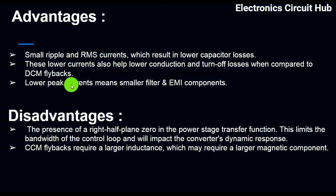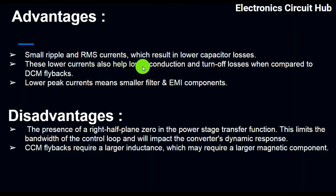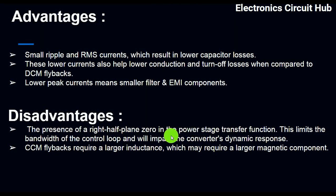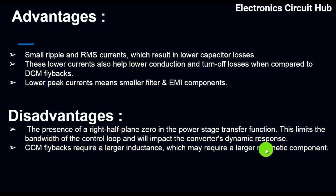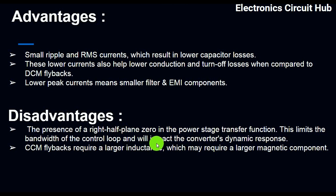Let us now understand the advantages and disadvantages of flyback CCM. Continuous conduction mode provides small ripple and RMS current, which leads to lower capacitor losses. These lower currents also help achieve lower conduction and turn-off losses compared to DCM flyback. Lower peak current means smaller filter and EMI components. However, the presence of a right-half-plane zero in the power stage transfer function limits the control loop bandwidth and impacts the converter's dynamic response. CCM flyback also requires large inductance, which may require a larger magnetic component, increasing transformer size and therefore cost.